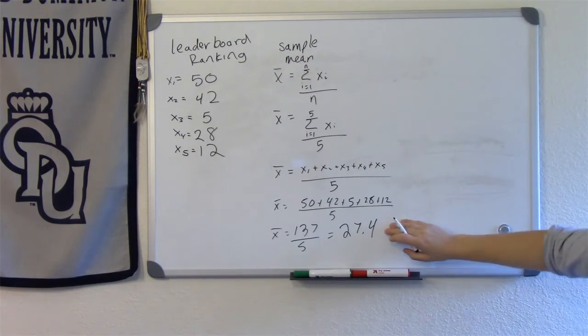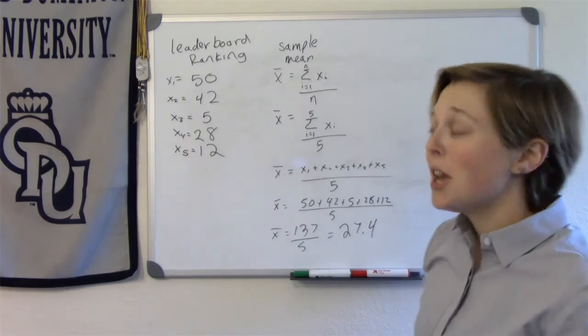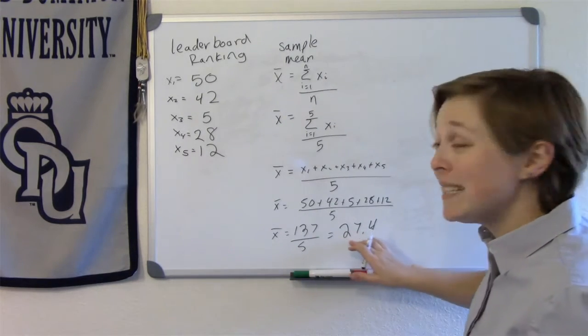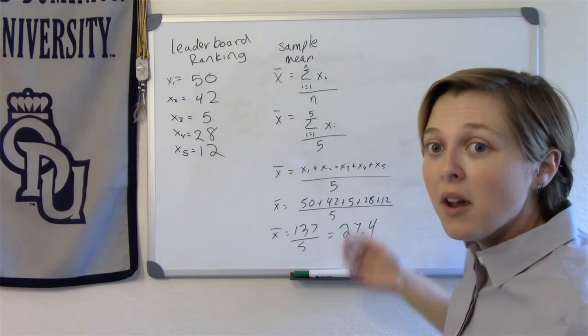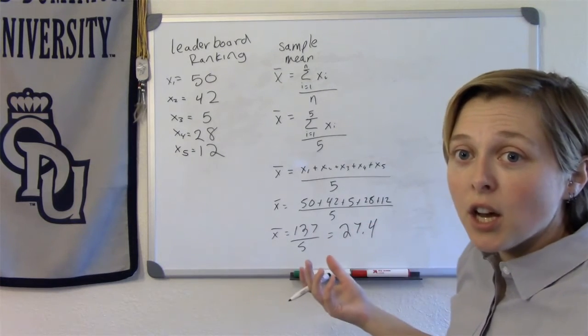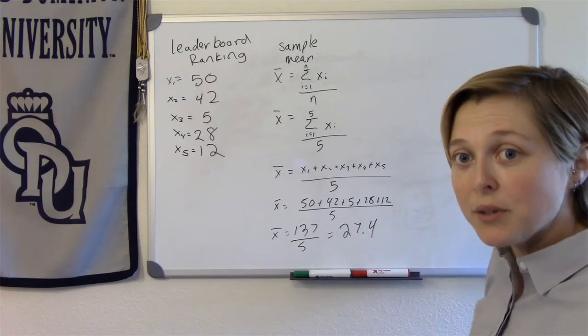So on average, my leaderboard ranking is the 27.4. So on average, I score somewhere around 27.4. That's the way you would interpret that.